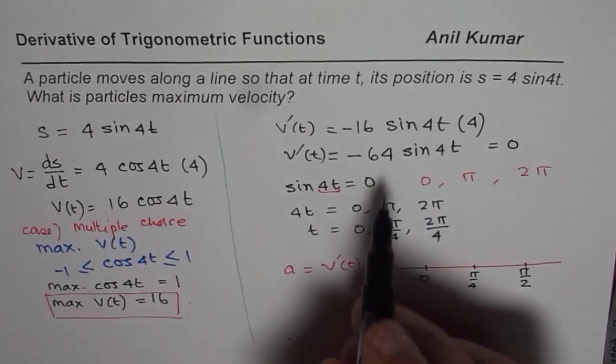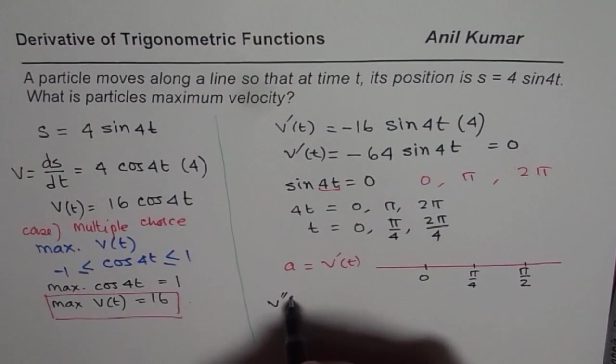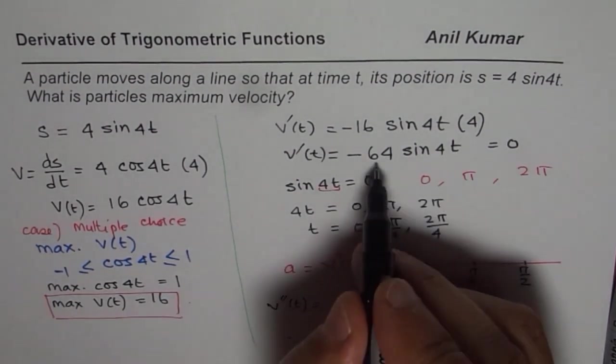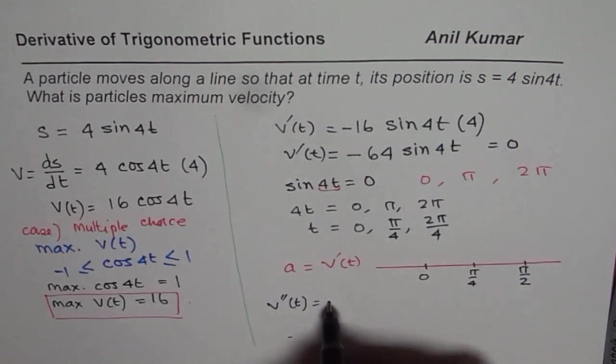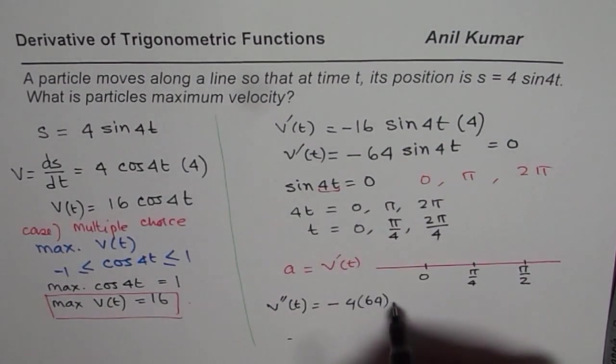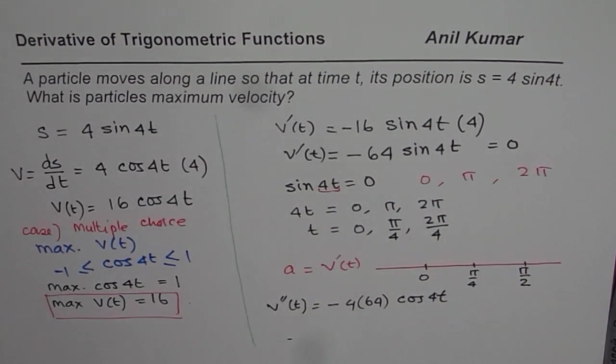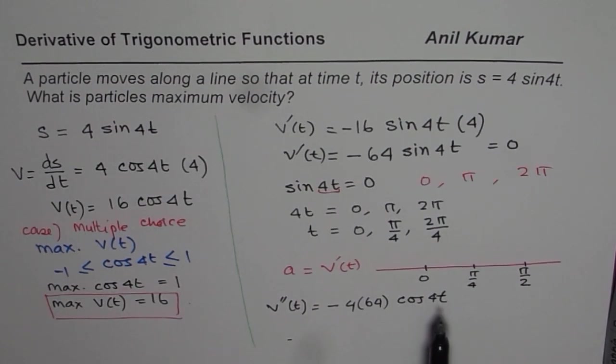We have acceleration right there. And the next derivative will be, the second derivative of velocity will be negative of 4 times 64 times the derivative of sine which is cos 4t. So that is the next derivative.